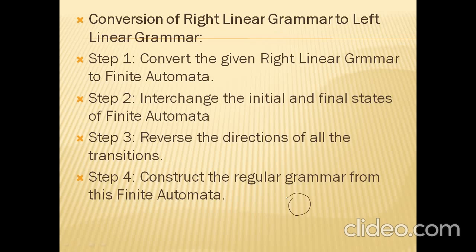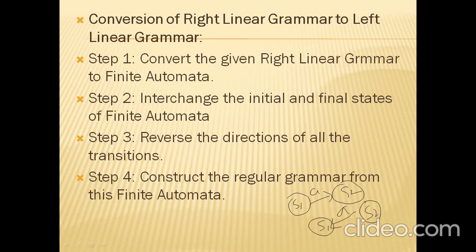For example, if we have a transition S1 on input A to S2, after reversing it becomes S2 on input A to S1 — we just change the direction. The final step is to construct the regular grammar from the resulting Finite Automaton. This is the complete process to convert Right Linear Grammar to Left Linear Grammar.